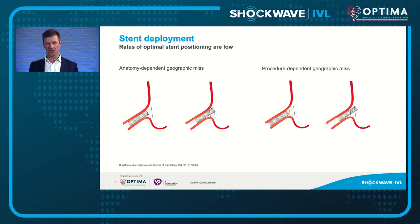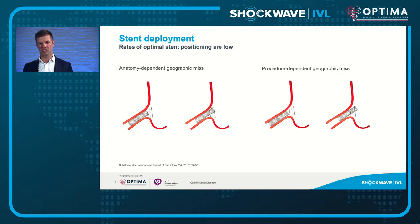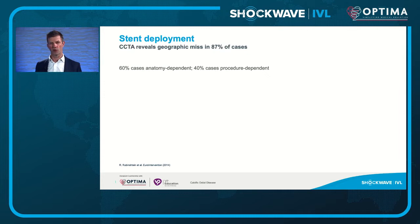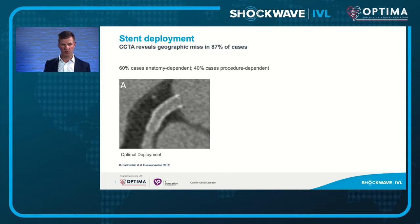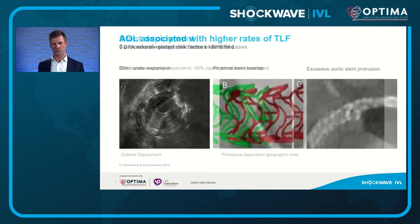We see geographical miss often. A study by Rubenstein of only 23 patients looked at geographical miss following aorto-osteal stenting using CT imaging, showing optimal deployment and two types of failures. This was anatomically dependent in about 60% of cases — where the angles were too great — and procedurally dependent in 40%, meaning operator dependent.